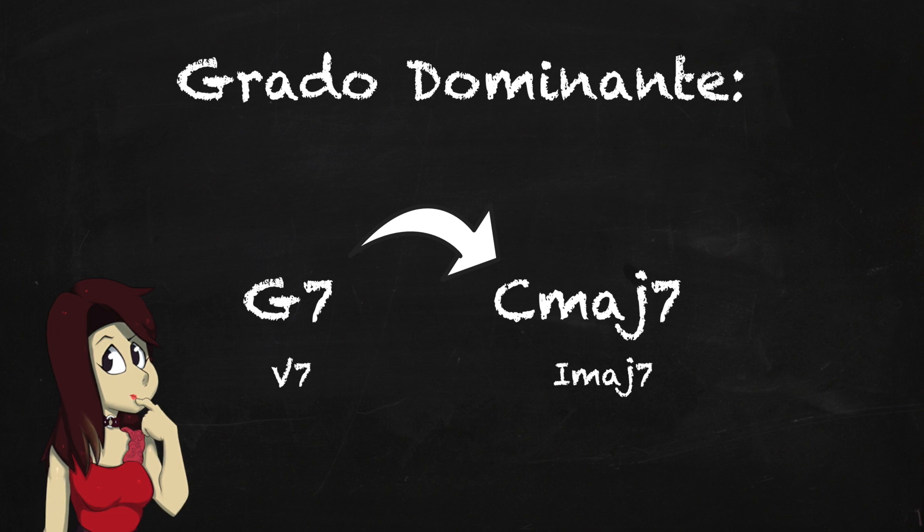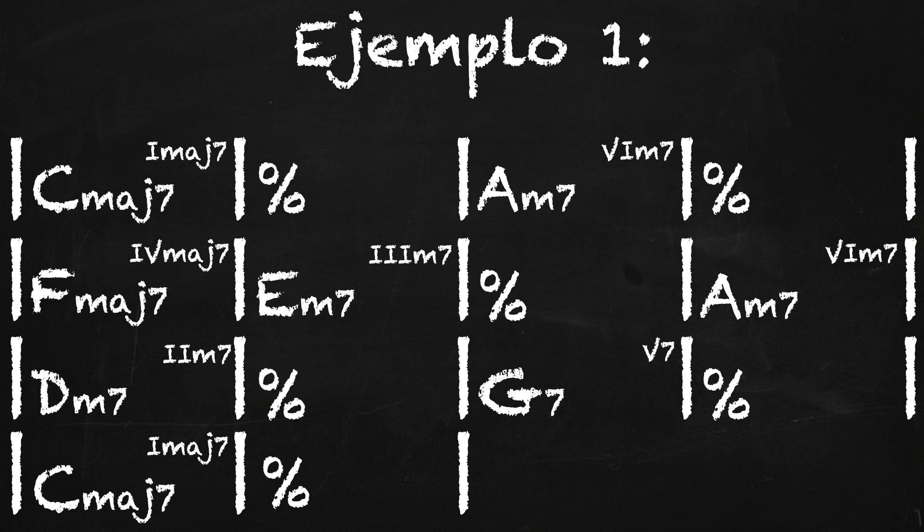Quiero que observemos el ejemplo número uno. Si te das cuenta en el primer sistema, en el primer compás tengo un Do maj7, esa es mi tonalidad y el acorde con el cual voy a empezar esta progresión armónica. En el tercer compás tengo un La menor 7 que es el sexto grado menor 7 de Do maj. En el segundo sistema, en el quinto compás aparecería un Fa maj7 que es el cuarto grado maj7 de Do. Y en el sexto compás aparece un tercero menor 7 que es Mi. Ya en el octavo compás volvemos a repetir el La menor que es el sexto grado, y luego pasamos a un Re menor 7 que es el segundo grado de Do en el compás 9 y 10.